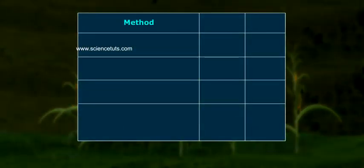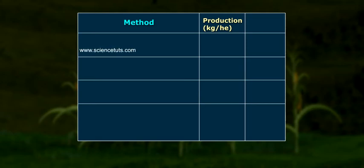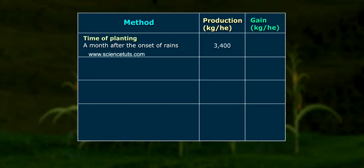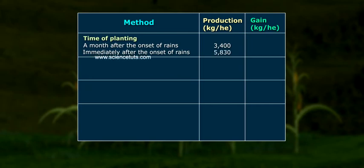The table shows Method and Production in kg per hectare, along with the Gain in kg per hectare. For time of planting: planting a month after the onset of rains yielded 3,400 kg per hectare, while planting immediately after the onset of rains yielded 5,830 kg per hectare — a gain of 2,430 kg per hectare.